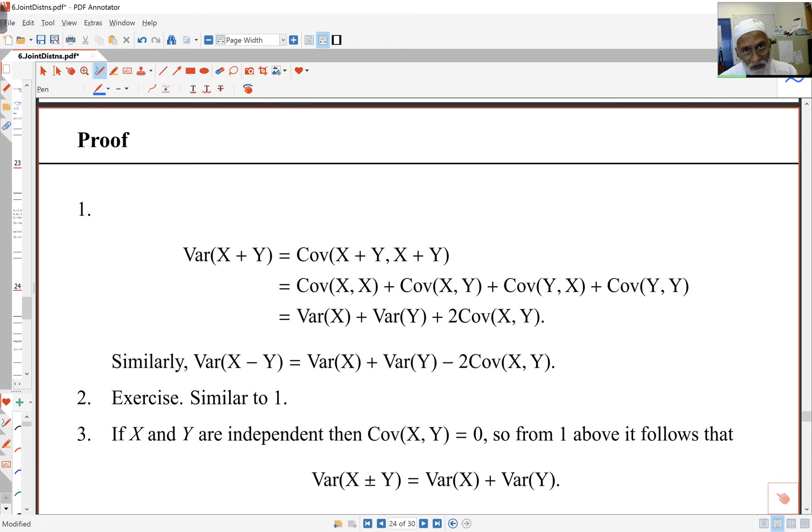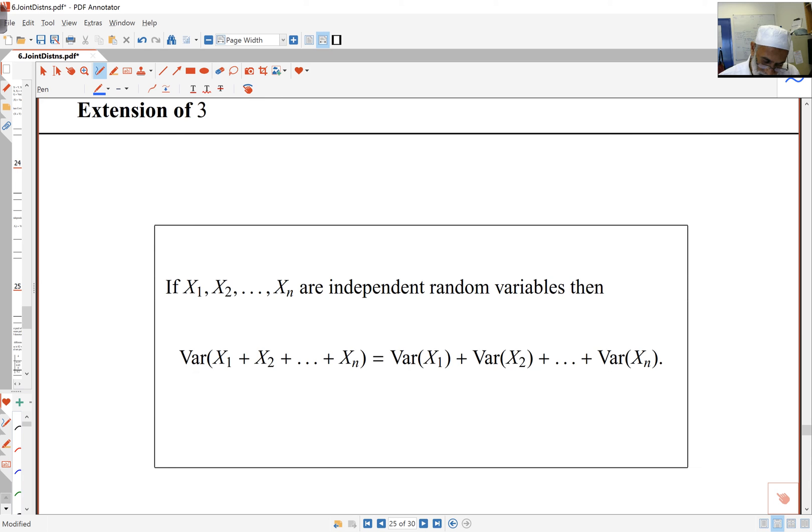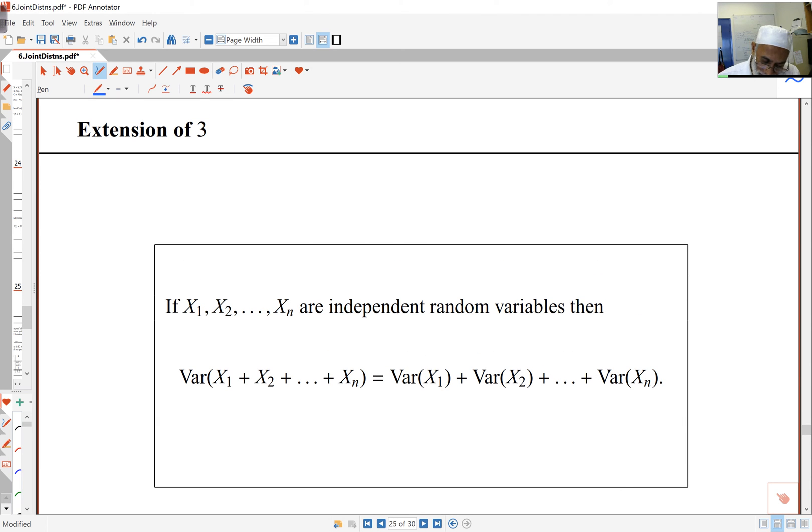Here are the proofs. You can look at them if you wish. The extension of this last result is, if x and y are independent, if I've got x1, x2, up to xn, and they are all independent, then the variance of the sum is the sum of the variances. This only works with independent random variables, or at least with the covariance as 0. Independence is a nice property to have because it simplifies our calculations.